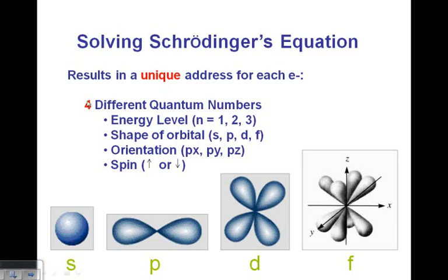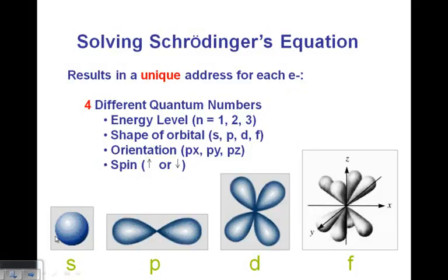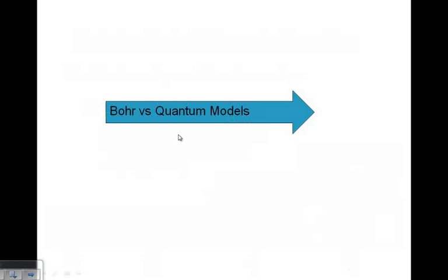Each electron has a unique address based on those four quantum numbers. The first quantum number is the energy level, and this correlates with the shell that the electrons travel in: n equals one, two, or three. The shape of the orbital - whether it's an s, a p, a d, or an f. The orientation - so if I have a p orbital here, this might be the x-axis, I'd have another one here on the y-axis, and then I would have a third one coming at me, which would be the z-axis. And then the last is, within a given orbital, I'm going to have up to two electrons, either one or two, and they're going to have opposite spins.